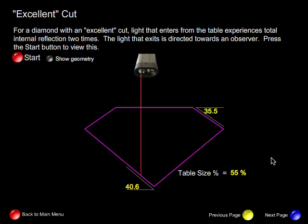For an excellent cut, this is how light behaves when it enters through the table. Notice that total internal reflection occurs two times: at this point and at this point. When light strikes the facet, it escapes. Total internal reflection occurs because these angles are greater than 24.4 degrees, the critical angle for diamond.